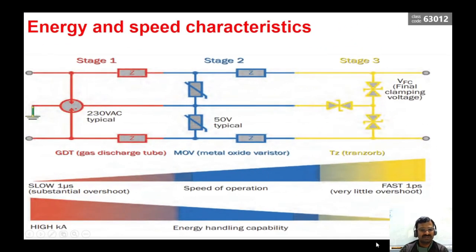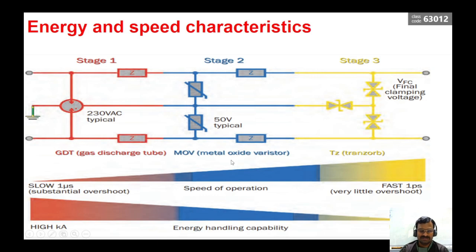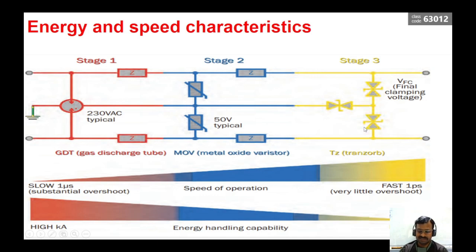Energy and speed characteristics of these SPDs differ at different parts of the electrical power system. On the high voltage side, we are going to have gas discharge tube or spark gap type SPDs — very slow in nature, but they can handle very high current or high surge voltages. At level 2 or type 2, we have metal oxide varistors, where the voltage and current levels are moderate, and speed of operation is also moderate. At the final stage, we have very high speed devices, but the current handling capacity is less — such as a transient voltage suppressor diode, usually called a TVS diode, used in stage 3.